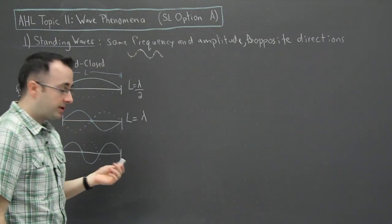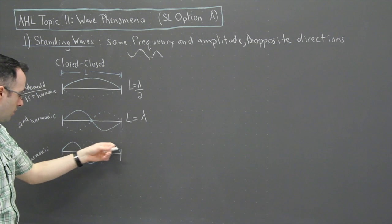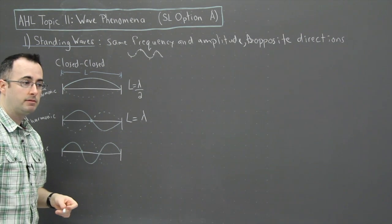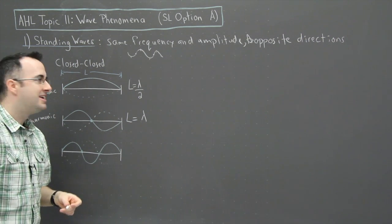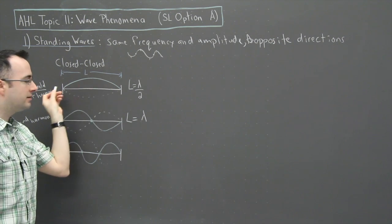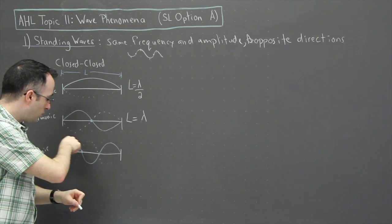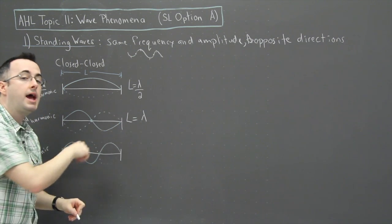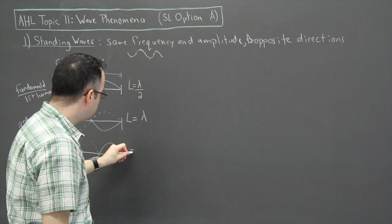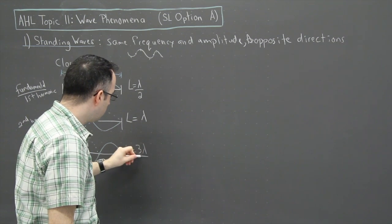Now this last one here, right here, look at how many halves we have. If you look at this, this is a half here of a wavelength, this is two halves, and the next one is one, two, three halves. So we can say it's three lambda over two.